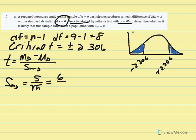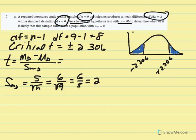Standard deviation is 6 and n equals 9, so the square root of 9 is 3. We get 6 over 3, giving an estimated standard error of the mean difference equal to 2. Now the mean difference equals 3, mu D from the null equals 0, divided by 2. Our t value equals 1.5.